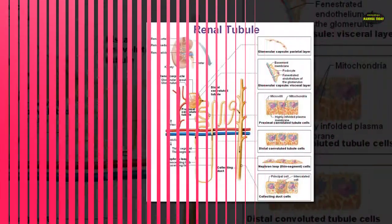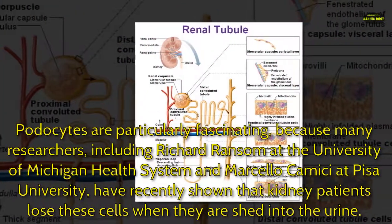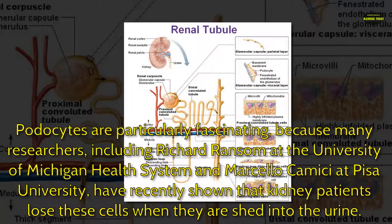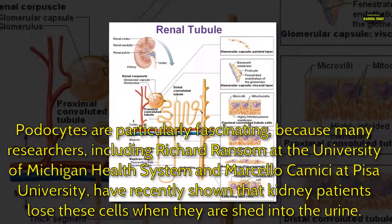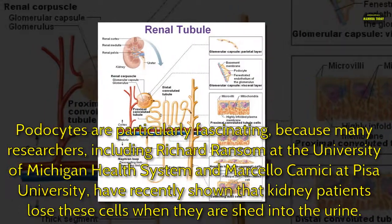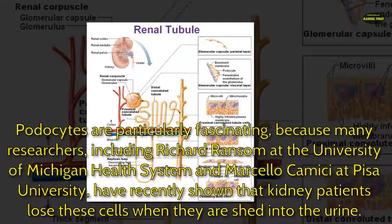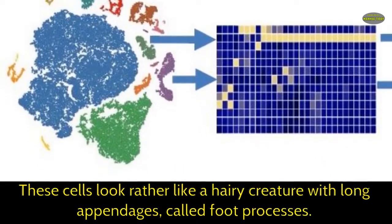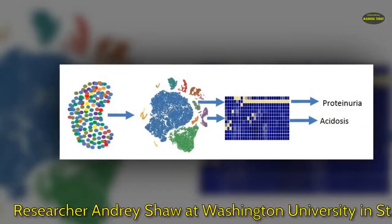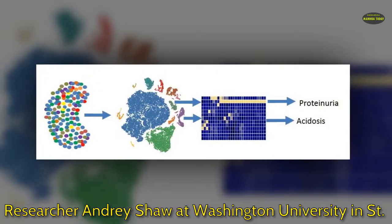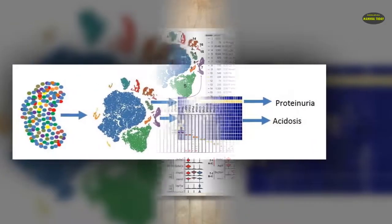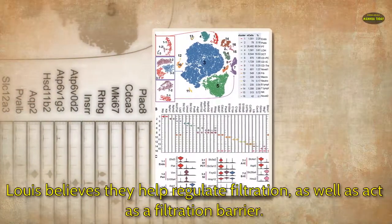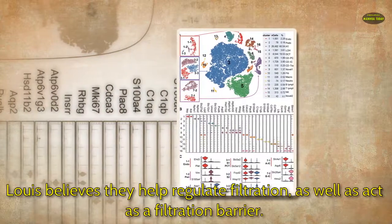Podocytes are particularly fascinating, because many researchers, including Richard Ransom at the University of Michigan Health System and Marcello Camasai at Pisa University, have recently shown that kidney patients lose these cells when they are shed into the urine. These cells look rather like a hairy creature with long appendages called foot processes. Researcher Andre Shaw at Washington University in St. Louis believes they help regulate filtration, as well as act as a filtration barrier.